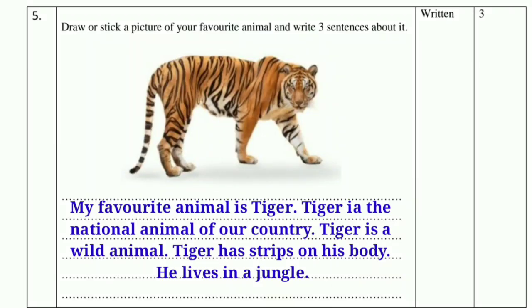Question 5: Draw or stick a picture of your favorite animal and write three sentences about it. This question is for three marks, for written response. You need to draw a picture of your favorite animal, or if you have a picture, you can stick it. Then you need to write three lines about it. For example, I chose tiger: My favorite animal is tiger. Tiger is the national animal of our country. Tiger is a wild animal. Tiger has stripes on his body. He lives in a jungle. In this way, you can write two to three sentences in simple words about any animal—dog, cat, or any other animal.